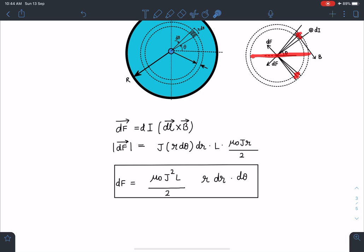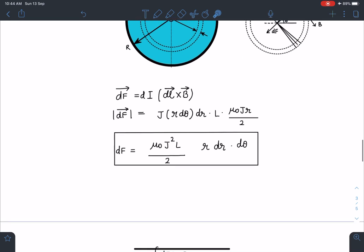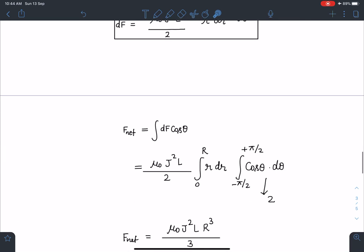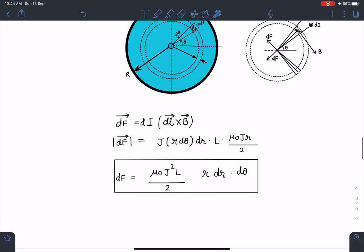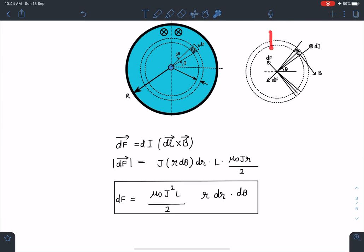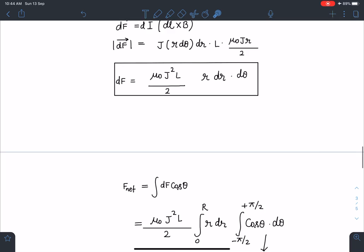Now here you can see, due to these two elements, the dF sinθ components is going to get cancelled. Only this dF cosθ component will be added together. So this F_net I can simply write it as integral dF cosθ, and this integral I have to perform on this half ring, on this half circle.